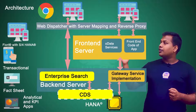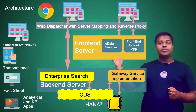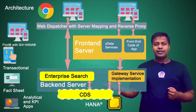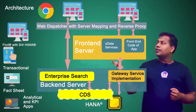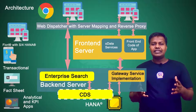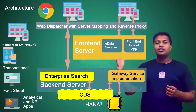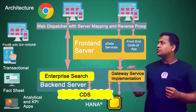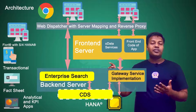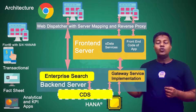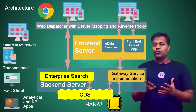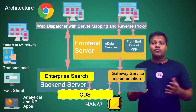Basically, the same scenario applies — any request goes through the web dispatcher to enterprise search. If you need data, it comes from the CDS view from the database and goes back to the application. Apart from that, if you are trying to get data of a transactional nature, you again go from the web dispatcher through the front end server to the back end server. The gateway services are used, and if it's a write operation, data is written directly into the SAP HANA database. If it's a read operation and you have a CDS view for that, you can also read data from the CDS view.